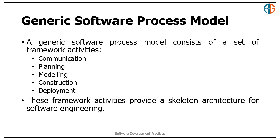Now let us break down the generic software process model. It consists of five core activities: communication, planning, modeling, construction, and deployment. Think of this as the building block framework that guides the entire software development process.